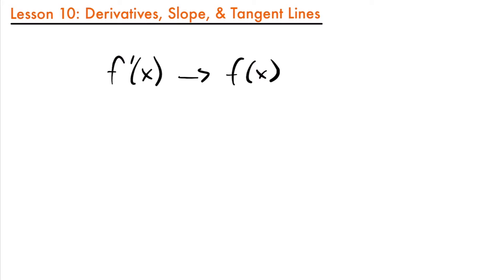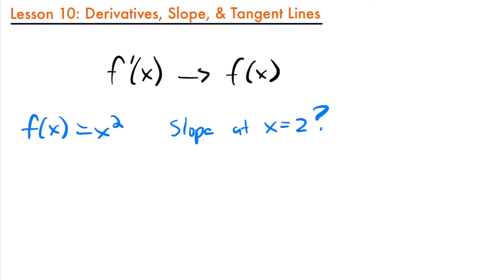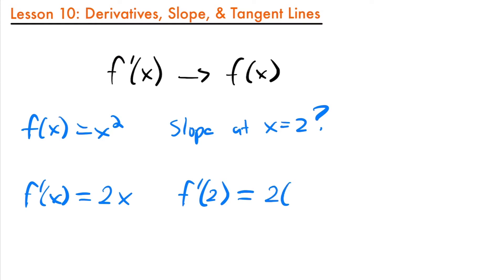So if we wanted to find the slope of the function f of x equals x squared, and I wanted to know the slope when x equals 2, we can take a derivative of this function and then plug in 2. So f prime of x is equal to the derivative of x squared. Using the power rule, we get 2 times x to the 2 minus 1, which would be 2x. Then plugging in 2, we get 2 times 2, which equals 4. That is the slope at the point x equals 2 for this function.